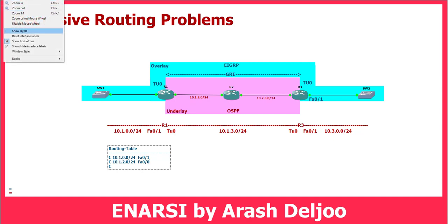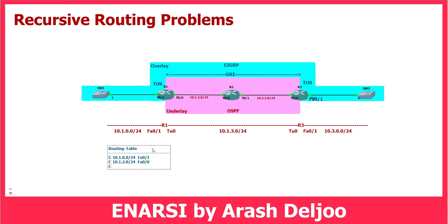We have another connected network, 10.1.2.0/24, over FastEthernet0/0. Here we can see the interface FastEthernet0/0. And we have one other connected network, 10.1.3.0/24, over Tunnel0. In the routing table, we have some routes from the overlay and some routes from the underlay — also called the transport network.